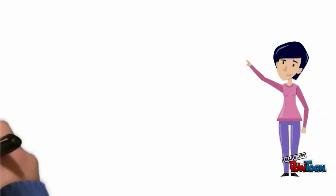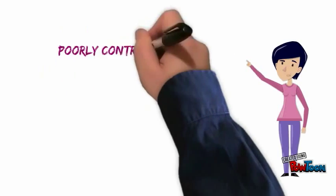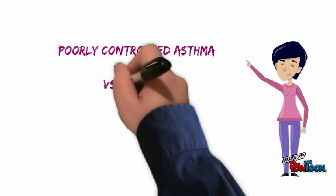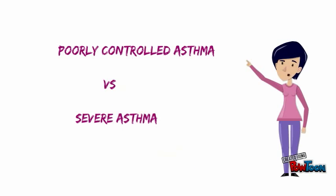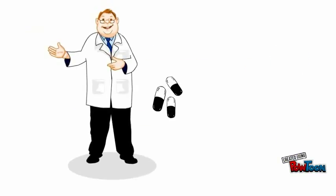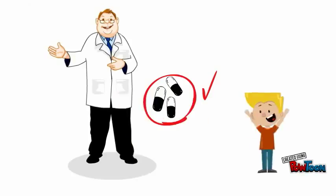It is worth noting that there is a difference between poorly controlled asthma and severe asthma. Poorly controlled asthma could potentially be made well controlled, whereas severe asthma, even if controlled, does result in symptoms. Adhering to the physician's recommended treatment regimen can result in improvements in cognitive function and educational attainment for children, reduce the risk of exacerbations, and can result in an improved quality of life for the patient.